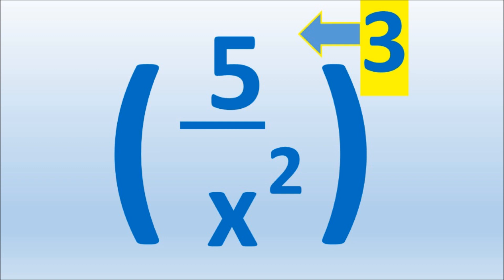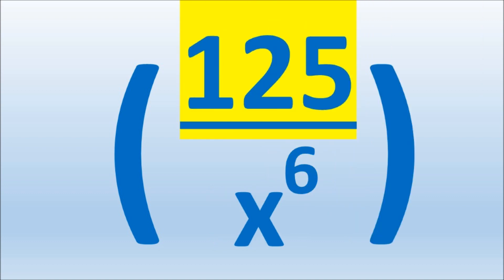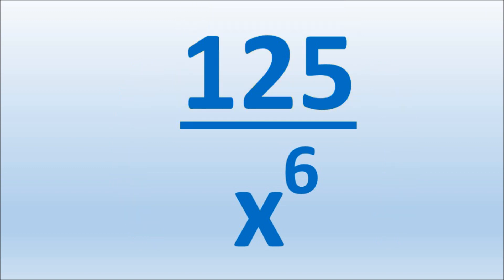5 has an unseen exponent of 1, so 1 times 3 is 3. 3 multiplied by 2 gives us an exponent of 6. 5 to the third is 125, and we leave x to the sixth on the bottom.